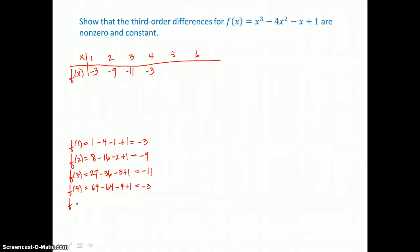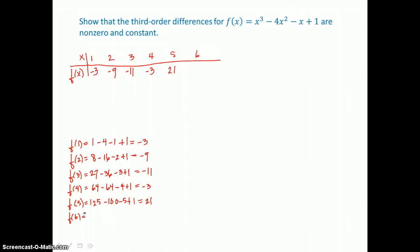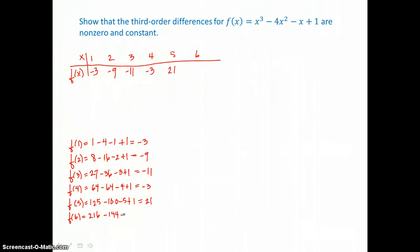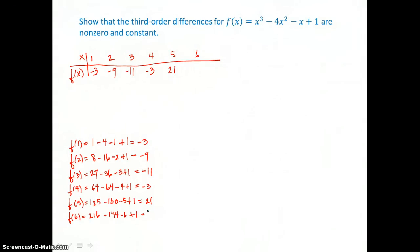Fifth function value, f of 5: 5 cubed is 125, 5 squared is 25 times negative 4 is negative 100, minus 5 plus 1, so that's 21. And f of 6: 6 cubed, I'll use my calculator, is 216. 6 squared is 36 times negative 4 is negative 144, minus 6 plus 1. 216 take away 144 is 72, take away 6 is 66 plus 1, giving a total of 67.